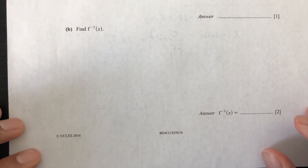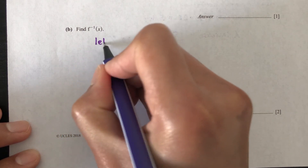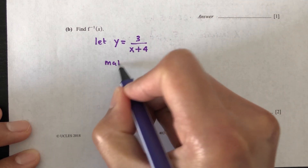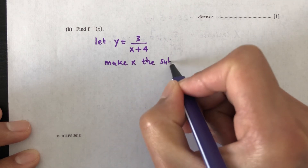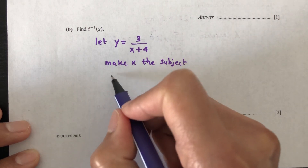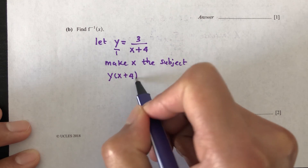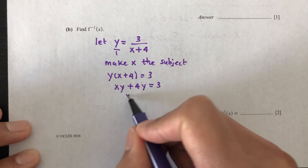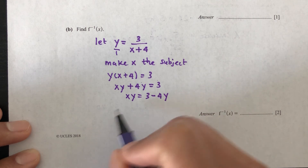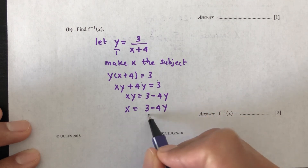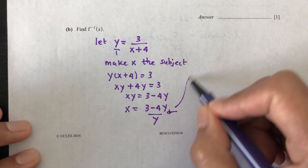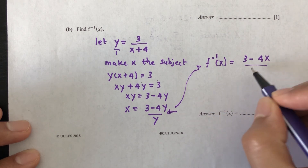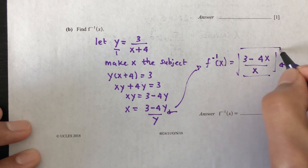Part B: find the inverse of f(x). First, let y equal 3 over (x plus 4). We make x the subject by cross-multiplying: y(x plus 4) equals 3, so xy plus 4y equals 3, giving xy equals 3 minus 4y, so x equals (3 minus 4y) over y. Replacing y with x, the inverse function is f⁻¹(x) equals (3 minus 4x) over x.